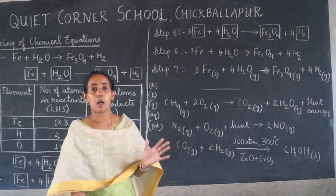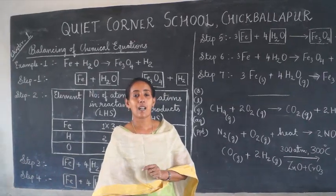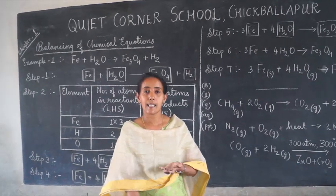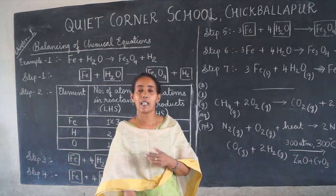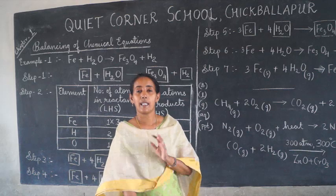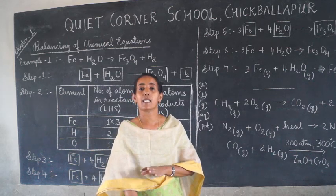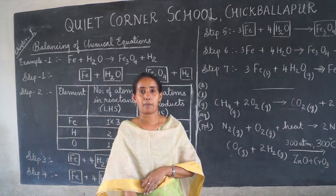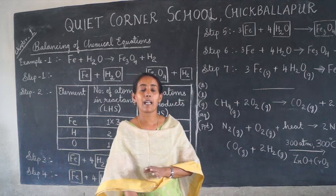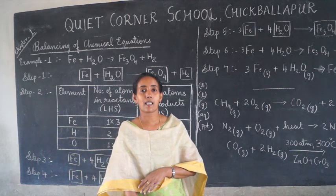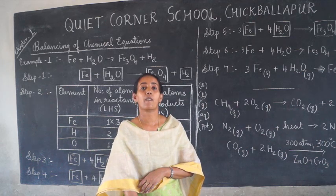A chemical equation gives information about the physical states of reactants and products, the conditions under which the reaction takes place, whether there is any temperature change, whether a gas is evolved, whether an insoluble solid is formed, and whether there is any color or smell change. By balancing chemical equations, we make the number of atoms on the reactant side equal to the product side, thereby satisfying the law of conservation of mass.